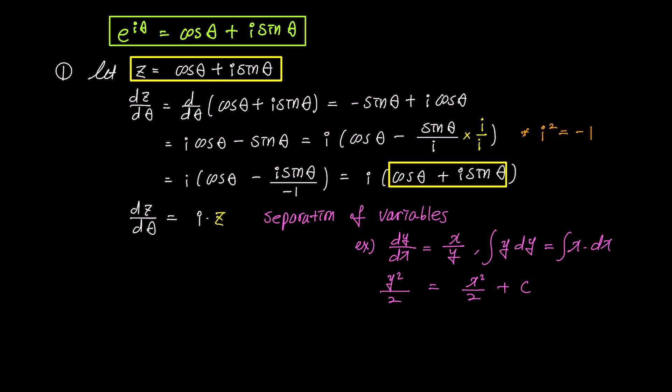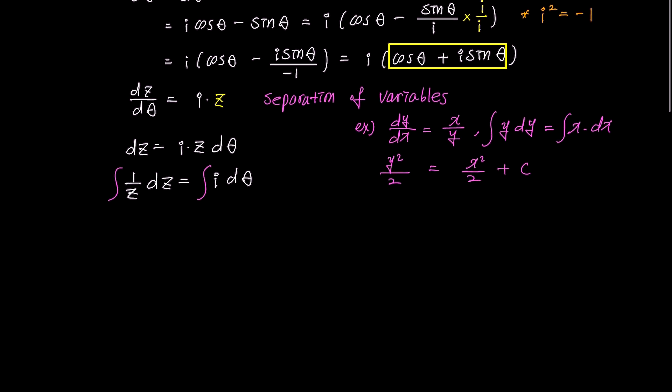Applying a similar approach to our differential equation, we multiply both sides by d theta, yielding dz equals i z d theta. To separate variables, we divide both sides by z, resulting in 1 over z times dz equals i times d theta. From here, we proceed with the integration of both sides.